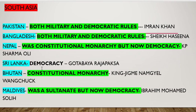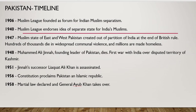Today we'll specifically start with the timeline of Pakistan. Pakistan has been like a pendulum — swinging back and forth — with no stability. That is one of the reasons why economically and socially it has remained backward. In 1906, the All India Muslim League was founded as a forum for Indian Muslim separatism — with the idea that there should be a different country for Muslims. In the 1940s, the Muslim League promoted the two-nations theory, demanding a separate country for Indian Muslims.